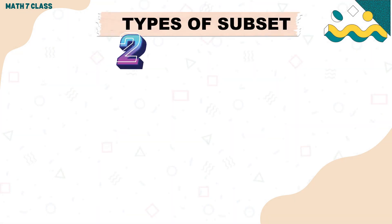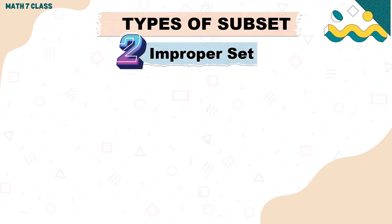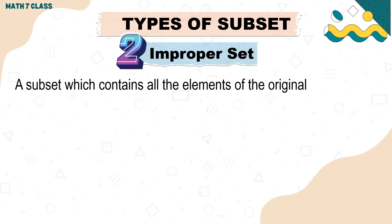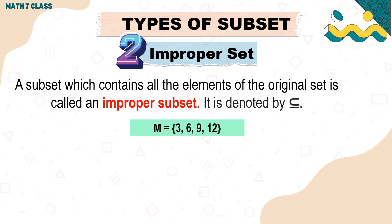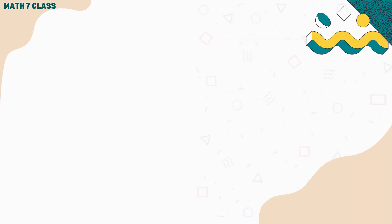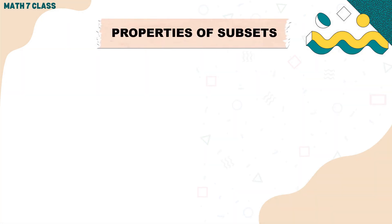The second type of subset is an improper subset. A subset which contains all the elements of the original set is called an improper subset. It is denoted by the subset symbol (⊆). For example, Set N = {3, 6, 9, 12}, so the improper subset is {3, 6, 9, 12} itself.